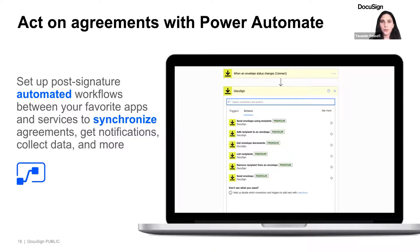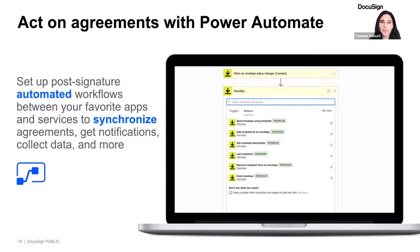A couple of examples where you can use this across an organization: for employee onboarding, once a new hire signs the offer letter, you can set up workflows to automatically create an account on Microsoft 365. Or if you're managing an IT service request, once the agreement is signed, you can kick off the provisioning process. With eSignature for Power Automate, you eliminate the manual, cumbersome process that comes after the agreement is signed, and it ends up saving you a lot of valuable time.